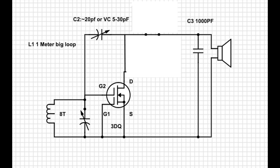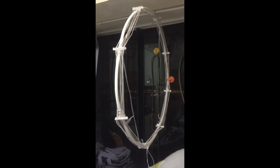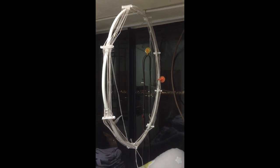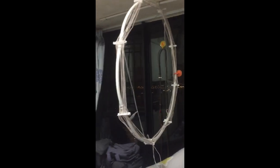20 pf is okay for my setup, which is a very big 1 meter loop antenna with 8 turns of this wire. So it works well for me in this setup.